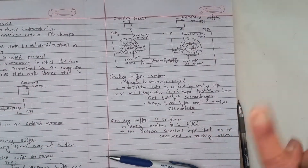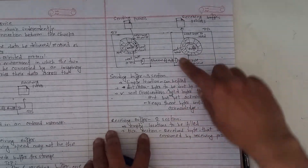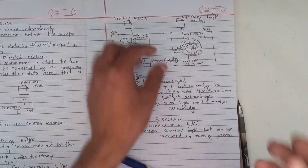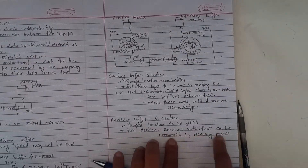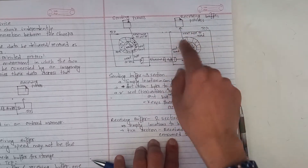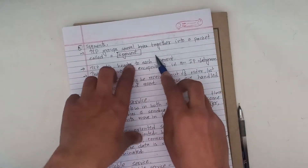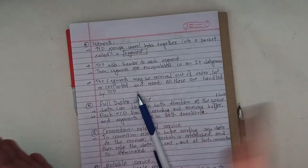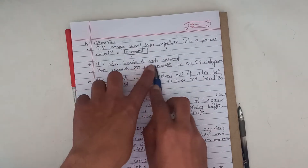In the receiving buffer, there are two parts. There is a section where received bytes that can be consumed by the receiving process are stored, and a next byte to read section.